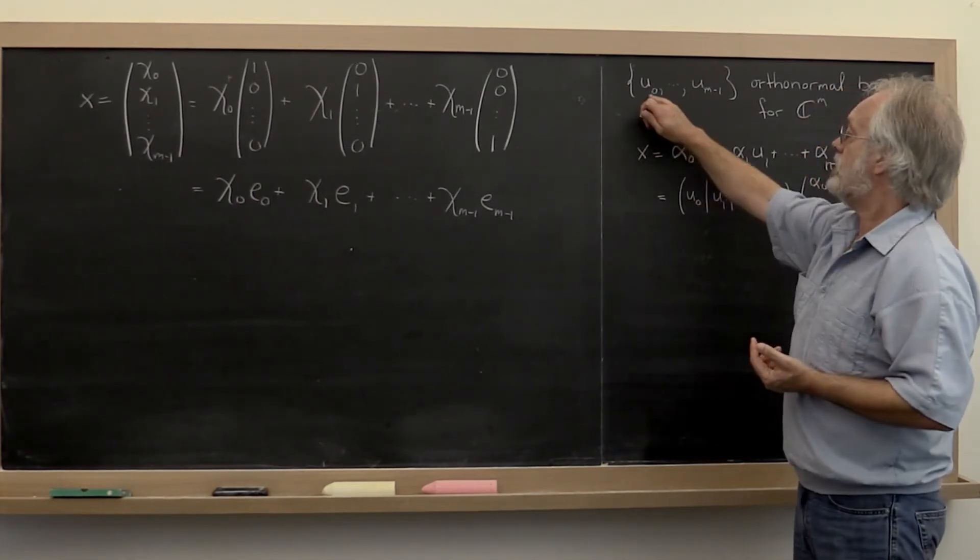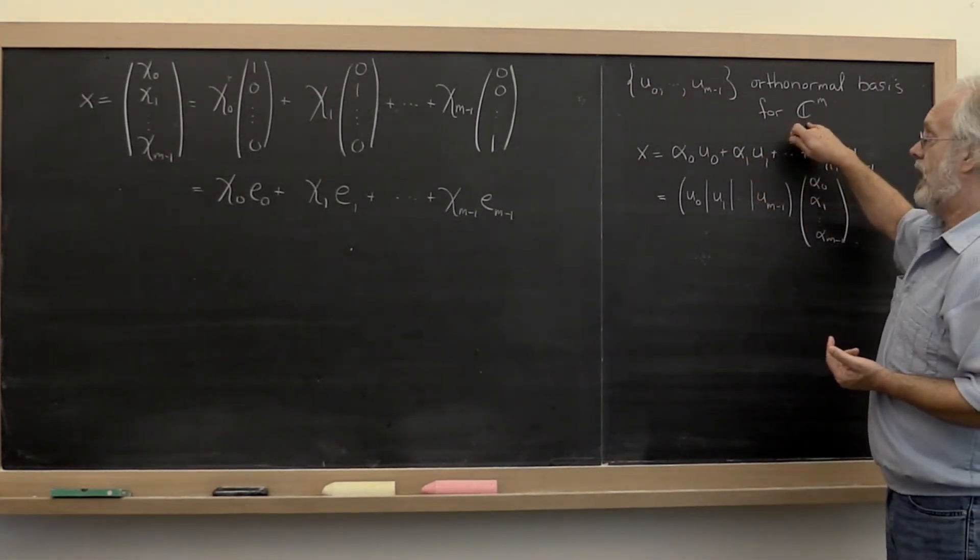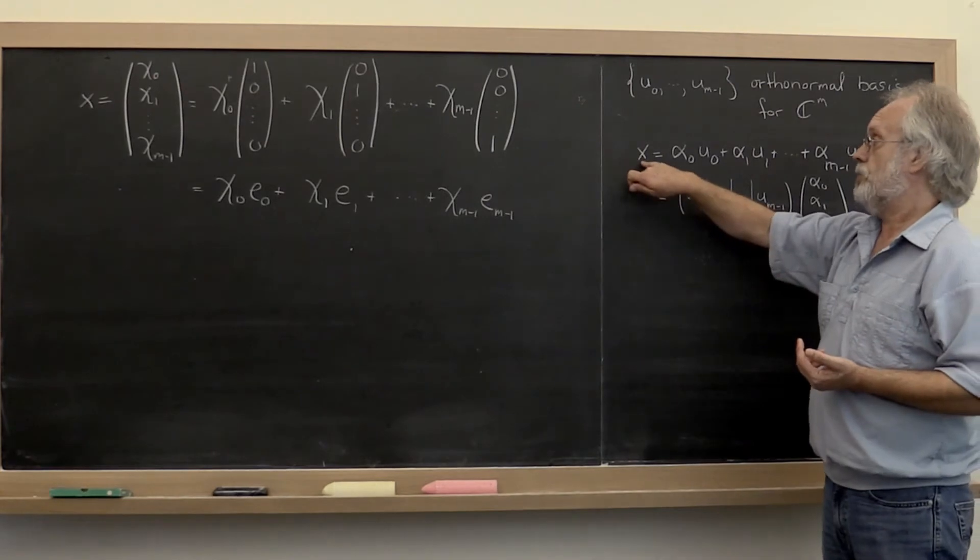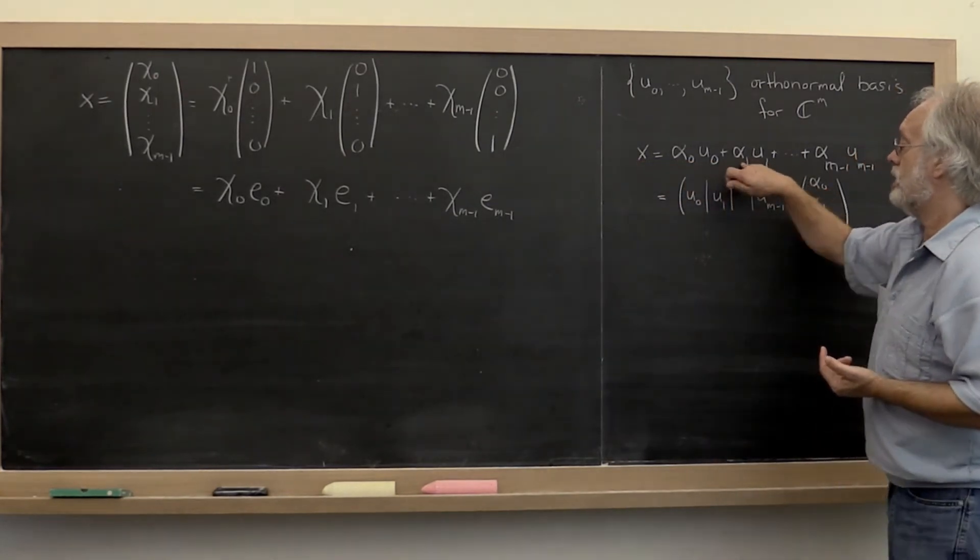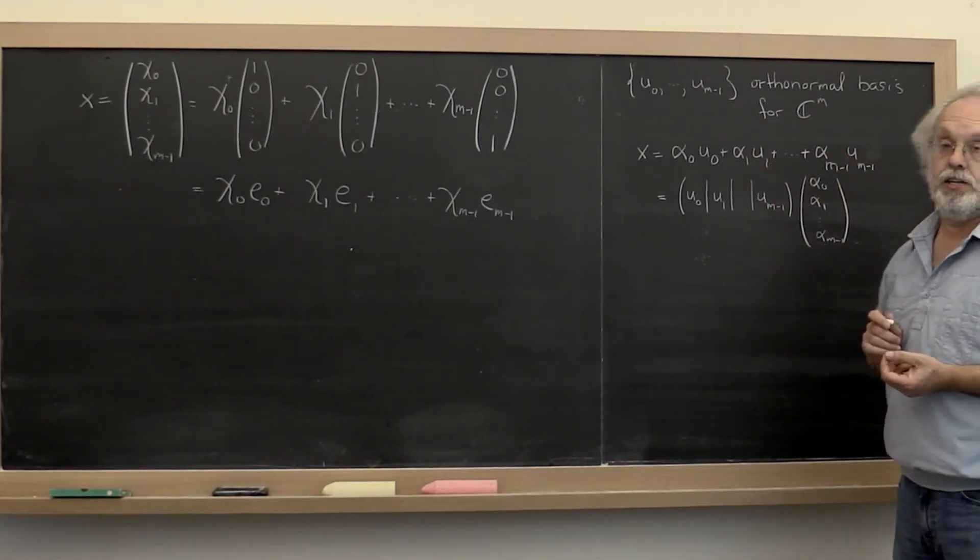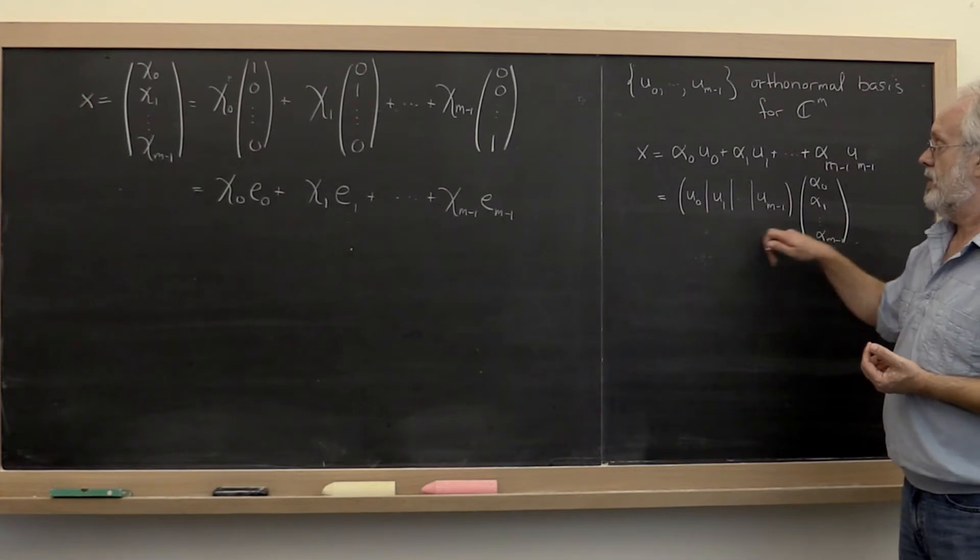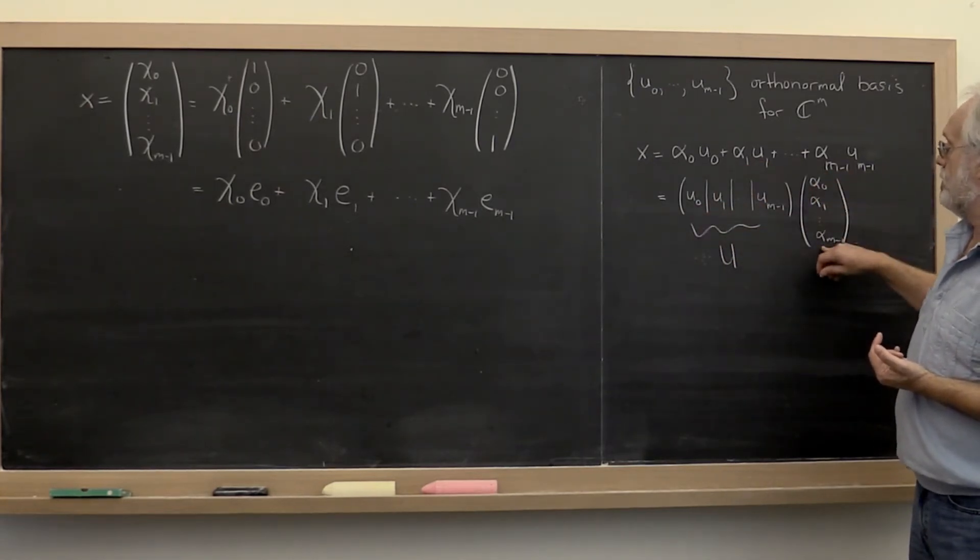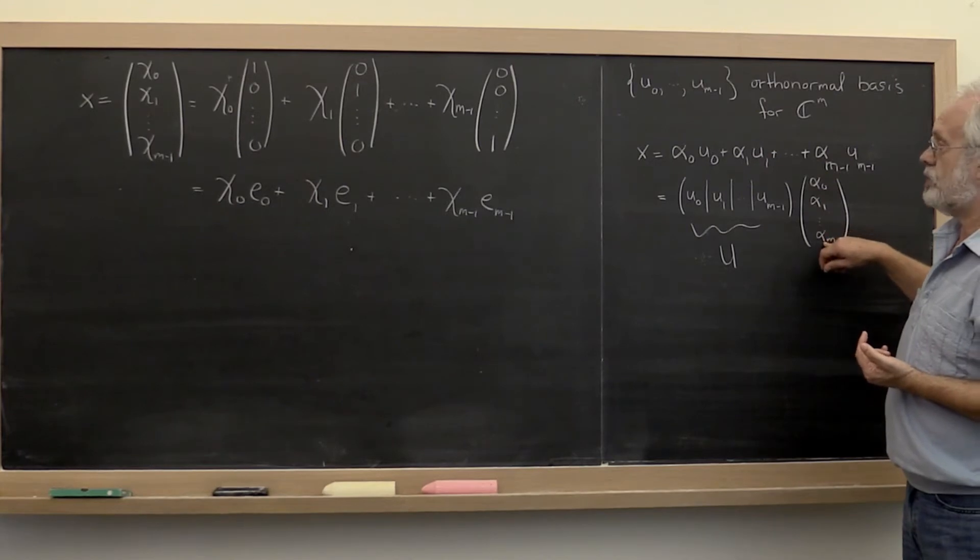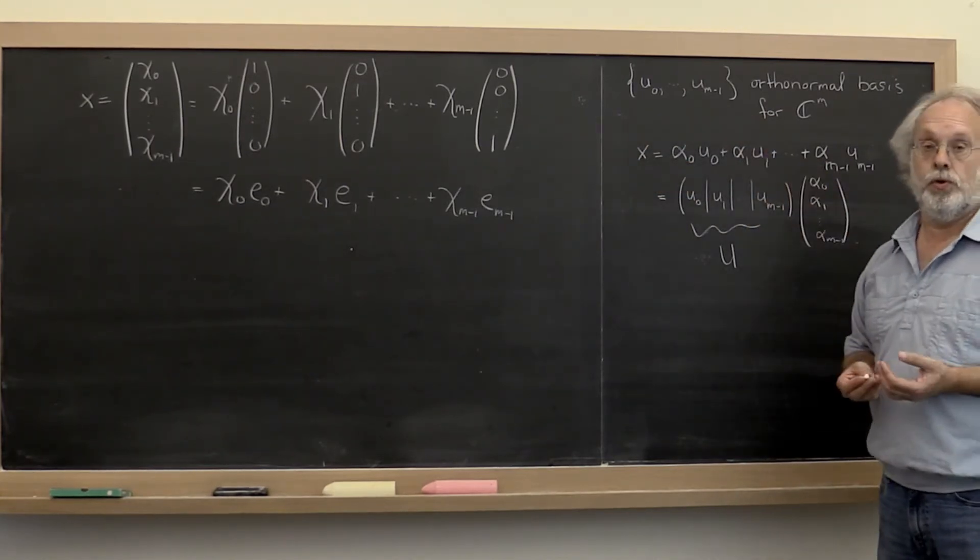Now notice that if u0 through u m-1 form an orthonormal basis for Cm, then you should be able to write x as some constant times u0 plus another constant times u1 and so forth. Which of course we know we can write as the matrix U times a vector that are the coefficients for vector x but now viewed in this new basis.